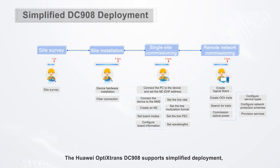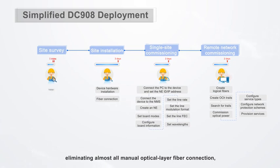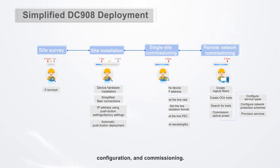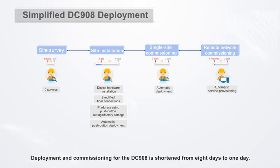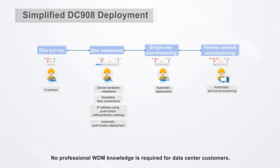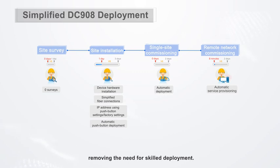The Huawei OpticsTrans DC908 supports simplified deployment, eliminating almost all manual optical layer fiber connection, configuration, and commissioning. Deployment and commissioning for the DC908 is shortened from 8 days to 1 day. No professional WDM knowledge is required for data center customers, removing the need for specialist-scale deployment.